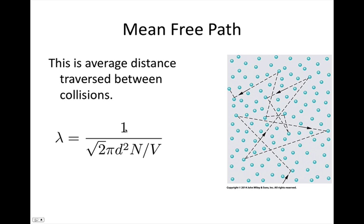And this is given by 1 over the square root of 2 times pi d squared, where d here stands for the diameter of the molecules, n, this is the number of molecules that we have, and v, this is the volume of our gas.